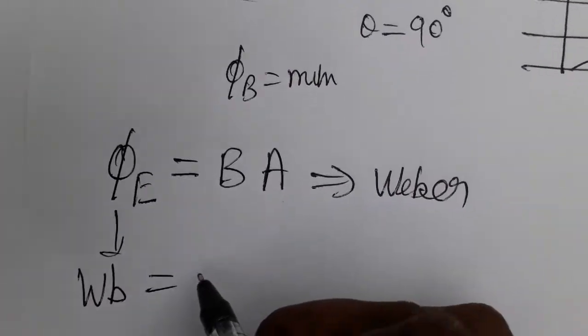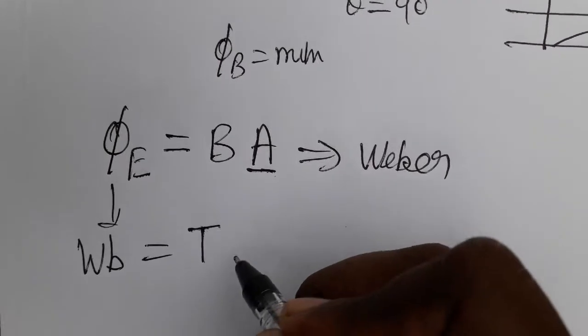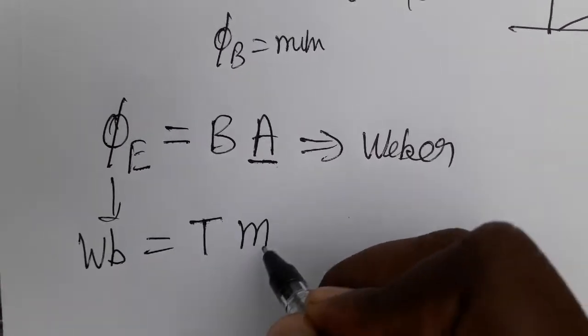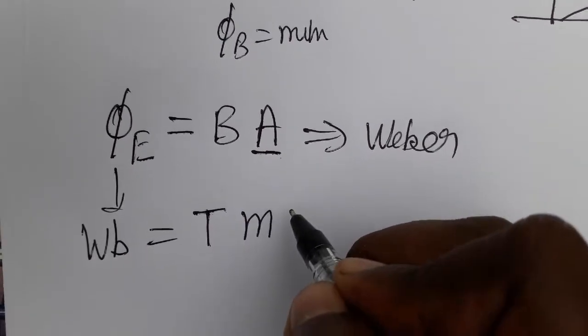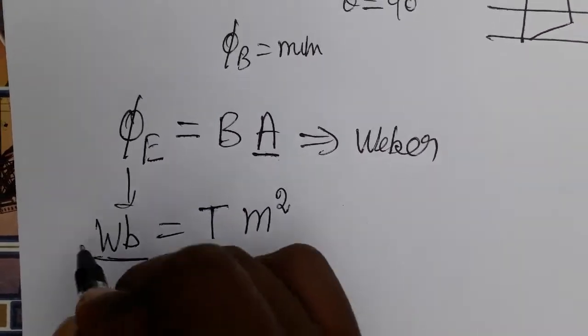Magnetic field is tesla, and area is length into breadth, or pi r square for circular loops, length into breadth for rectangular loops, or l square for square loops. One Weber equals one tesla into one meter square.